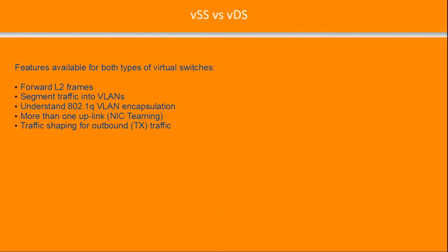Features available for both types of virtual switches — standard and distributed — include the ability to forward Layer 2 frames, segment traffic into VLANs, understand 802.1Q VLAN encapsulation, allow more than one uplink (also called NIC teaming), and traffic shaping for outbound traffic.